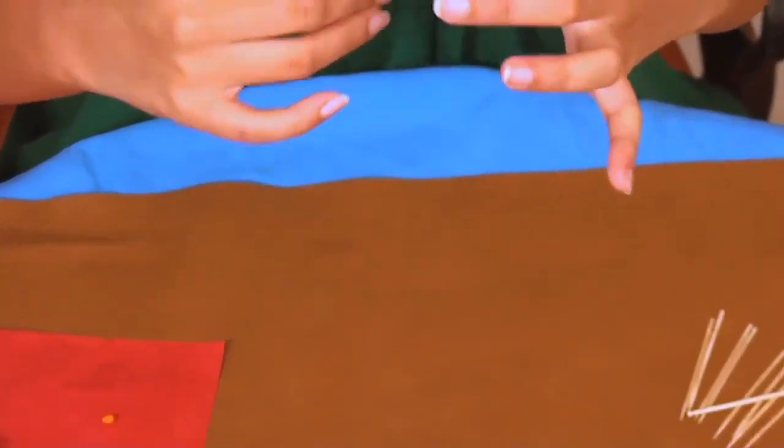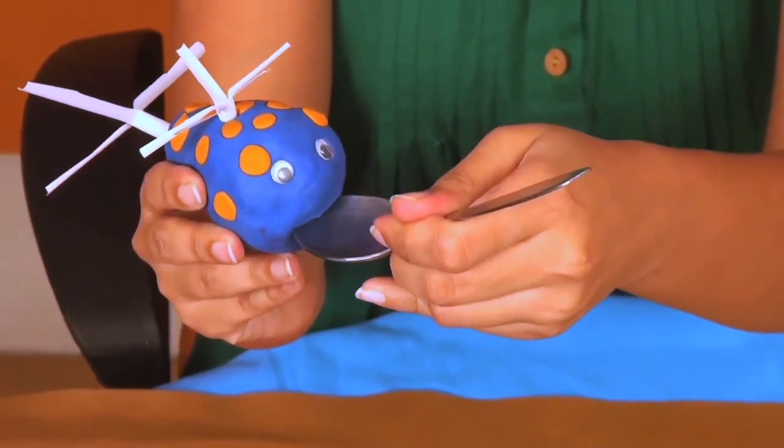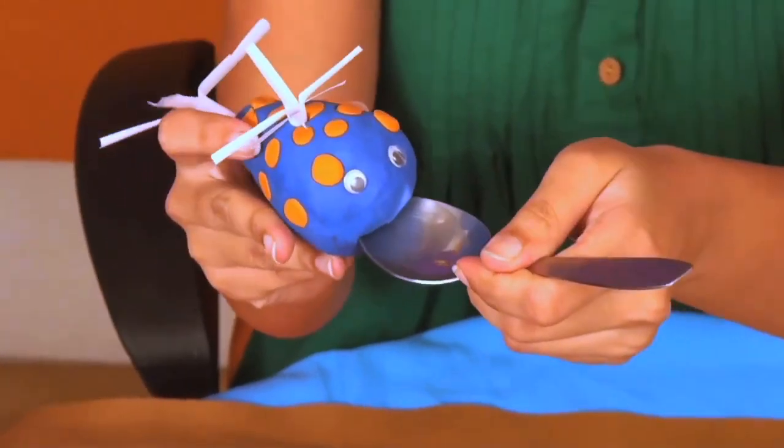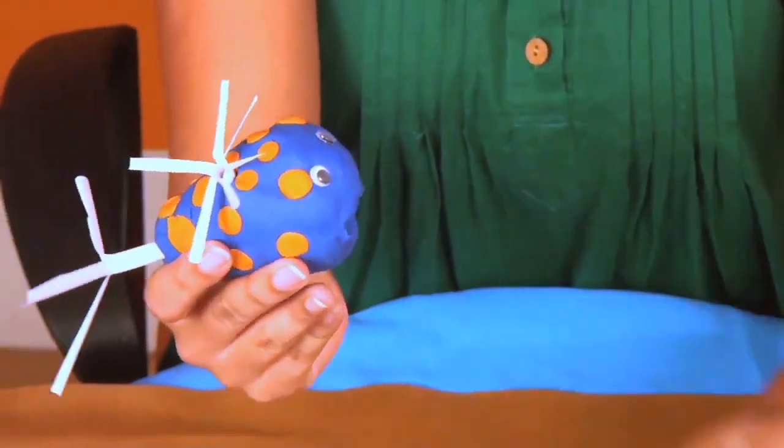Take some toothpicks and break them in half. Then take a spoon and press it under the eyes to make the mouth. Make sure your whale has a nice, wide smile like this.